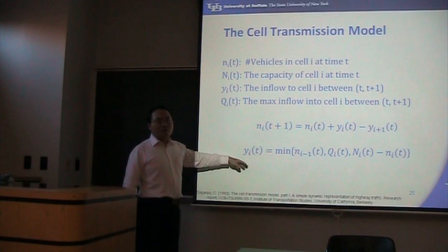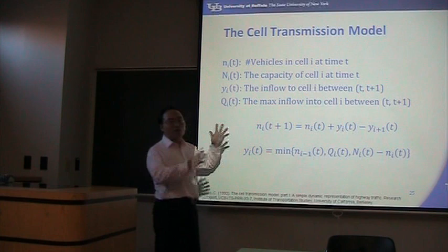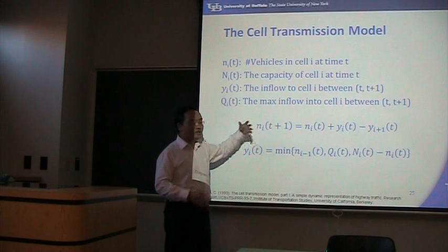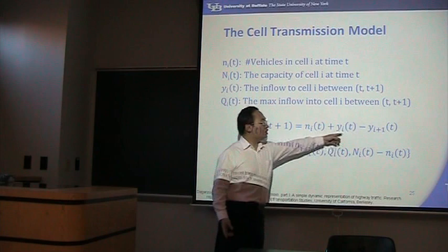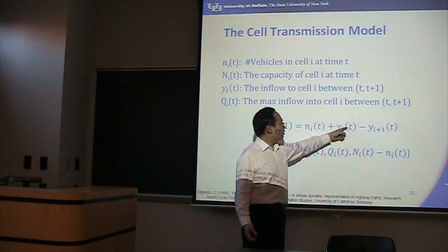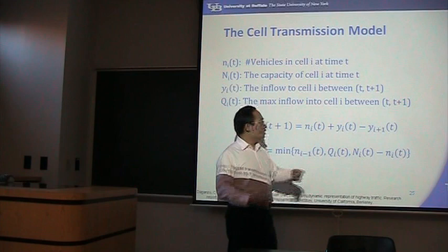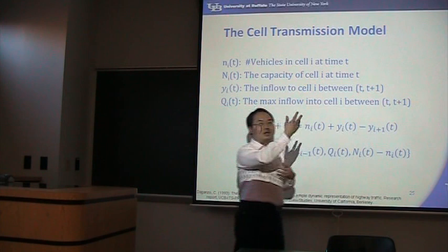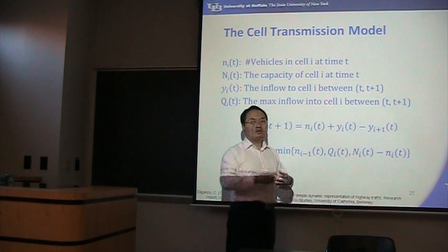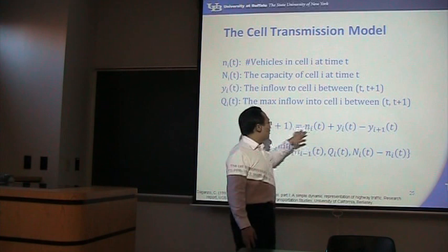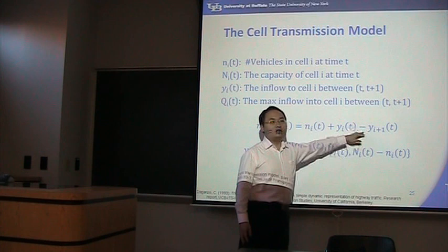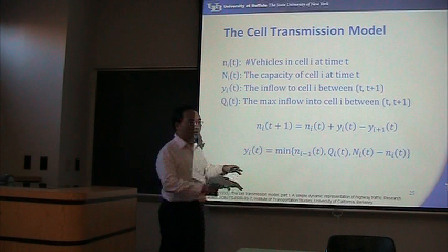There are two basic formulas. The first is easy to understand: the number of vehicles in a cell at the next time step equals the current number of vehicles plus inflow minus outflow. The inflow to cell i is Y_i(t), and the inflow to cell i+1 equals the outflow from cell i. So outflow equals the next cell's inflow. This is simply flow conservation.